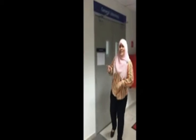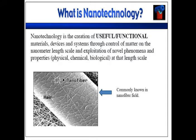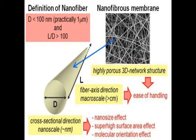So I will explain what is the meaning of nanotechnology. Nanotechnology is the creation of useful materials, devices, and systems through control of matter on the nanometer length scale and exploitation of novel phenomena and properties at that length scale. It is commonly known in the nanofiber field, which you can see in the picture on your left side. Nanofiber can be defined as a fiber having a diameter less than a micron. It is a highly porous 3D structure and the fiber exists in a direction from micro scale to nano scale.